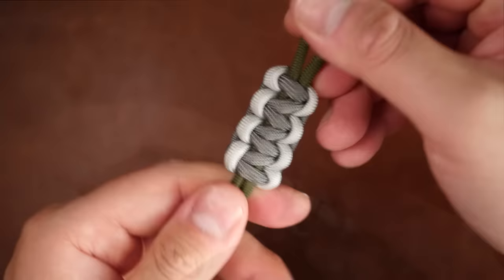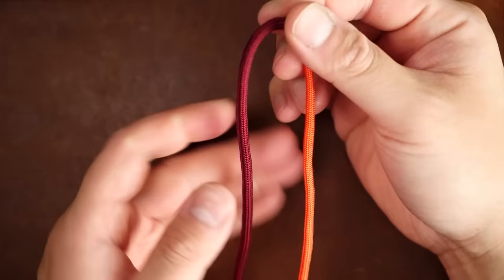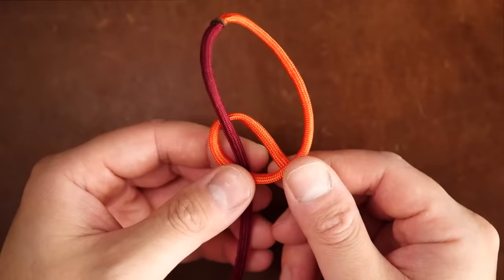Number two, the snake knot. Like the cobra, this knot can make a simple bracelet and also be used for a variety of situations. I'm going to tie a clockwise snake knot by taking the orange strand and making a clockwise loop around the burgundy.